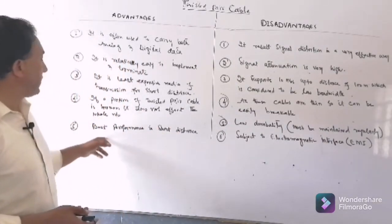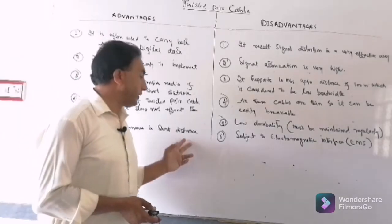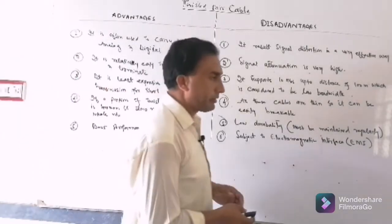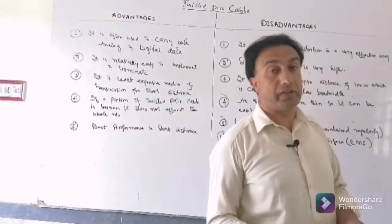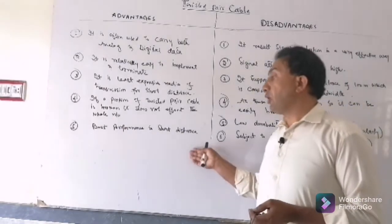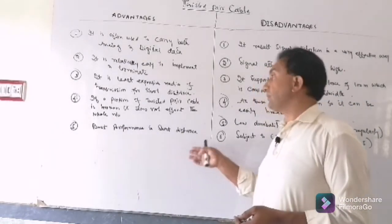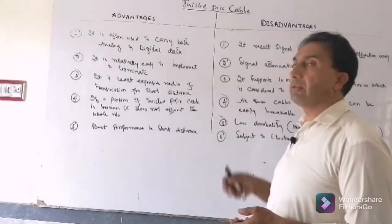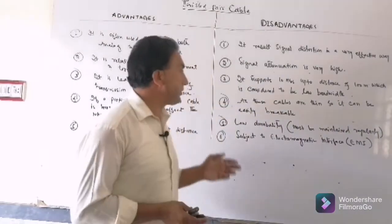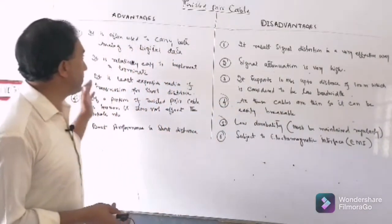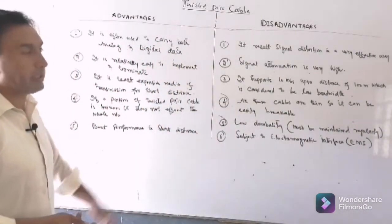The fifth advantage is best performance at short distance. It shows better performance as compared to the other cables at short distances. So these were some of the advantages of the twisted pair cable.